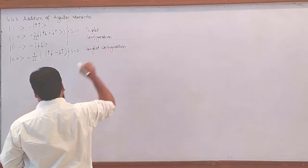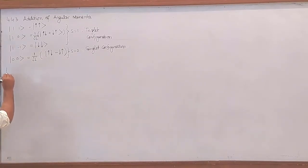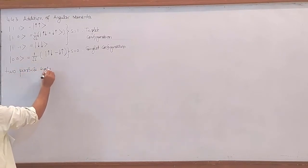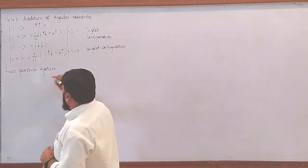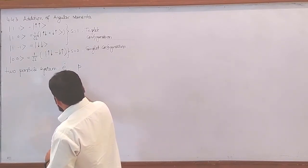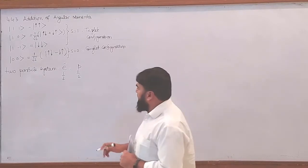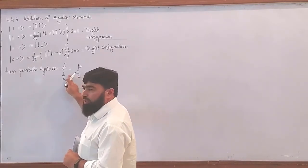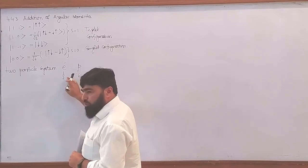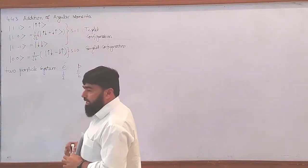First, understand that we have a two-particle system, which is the hydrogen atom, having an electron and a proton. The electron has spin-half and the proton has spin-half. There is a possibility that both spins will be up — both are plus-half — and we get one configuration, one state of the whole hydrogen atom system.